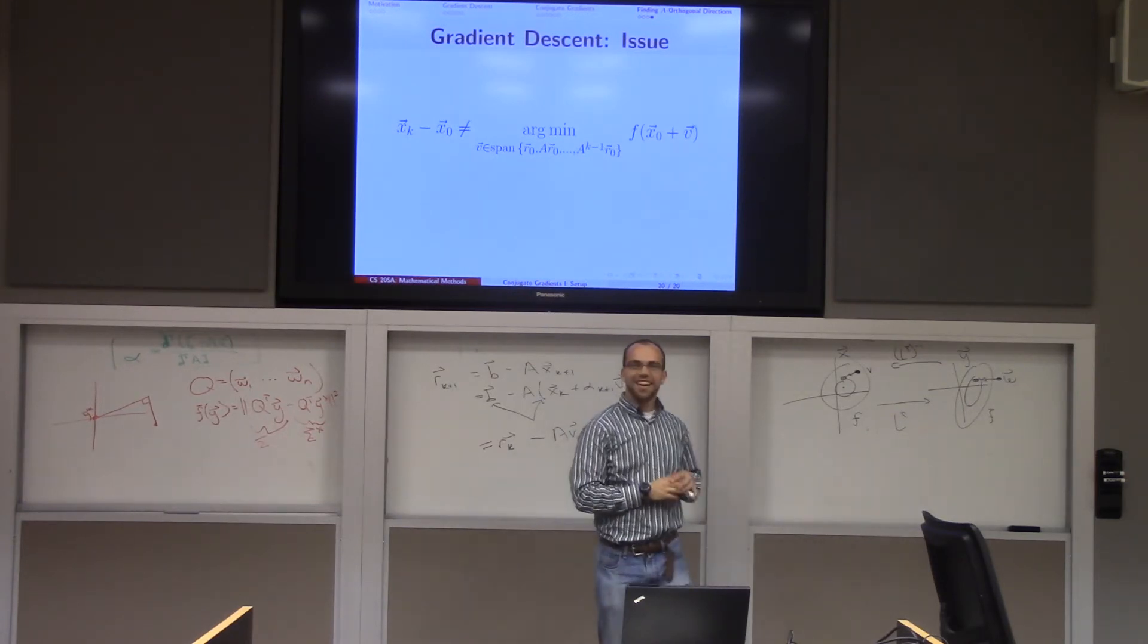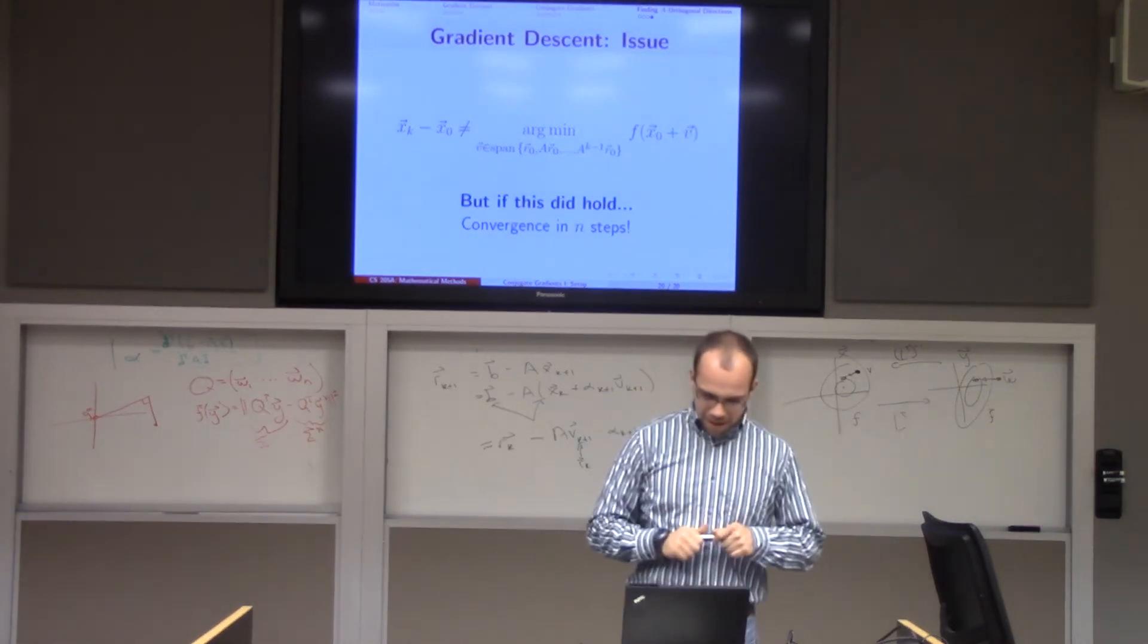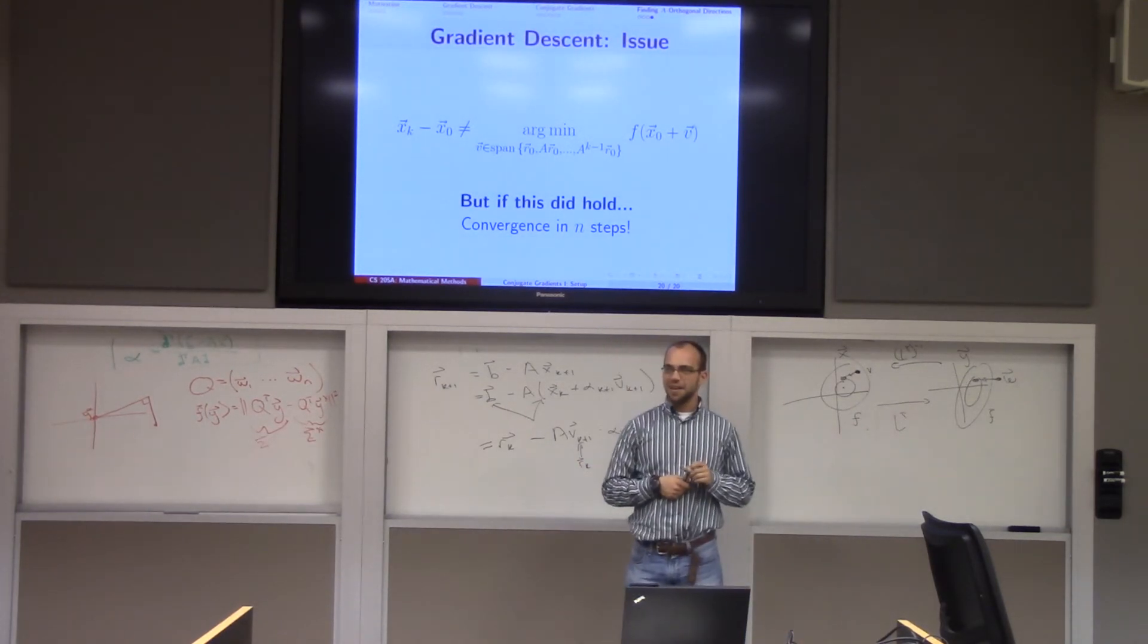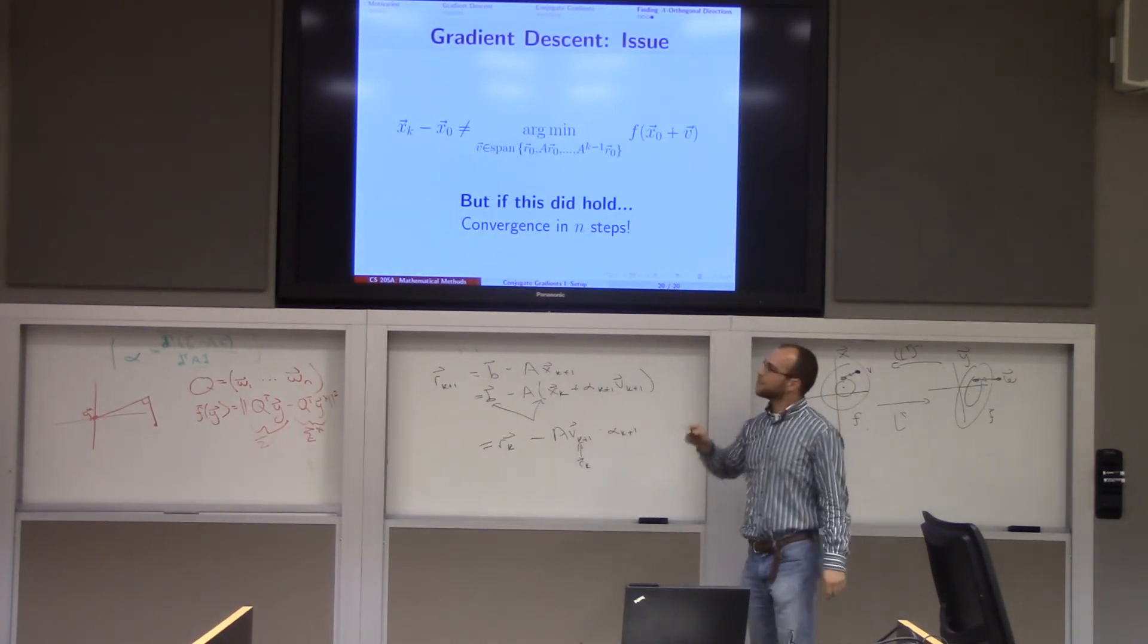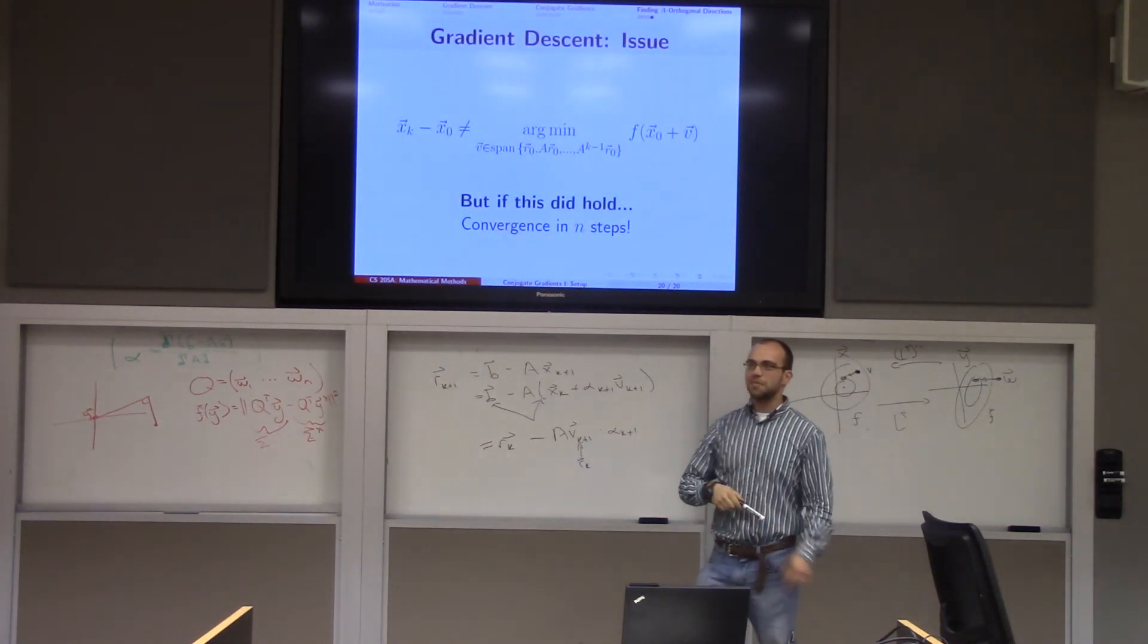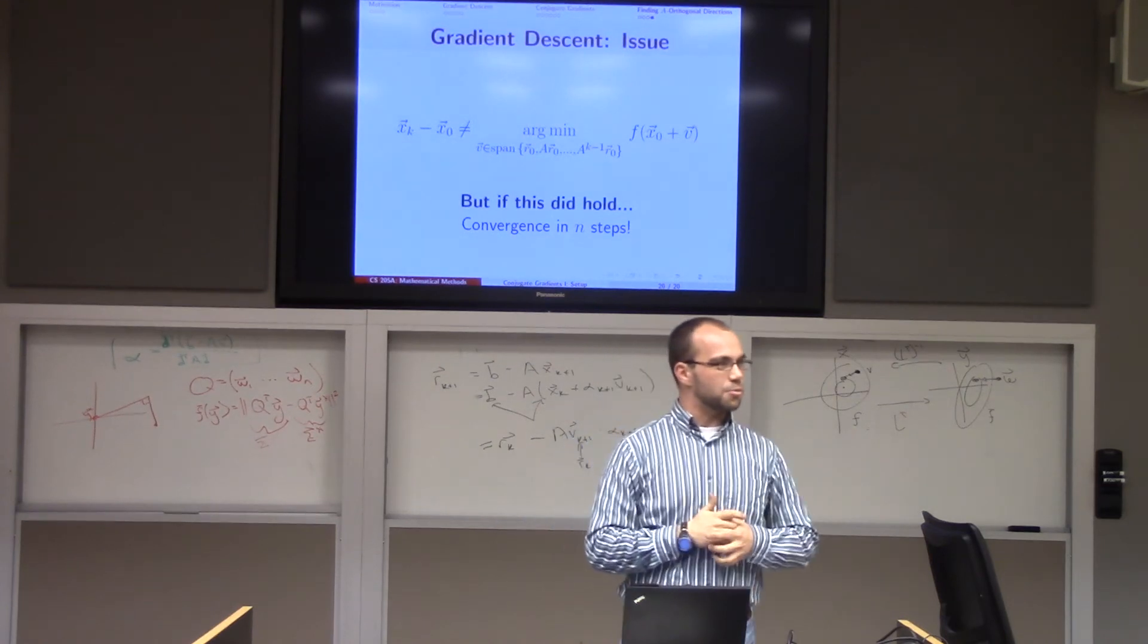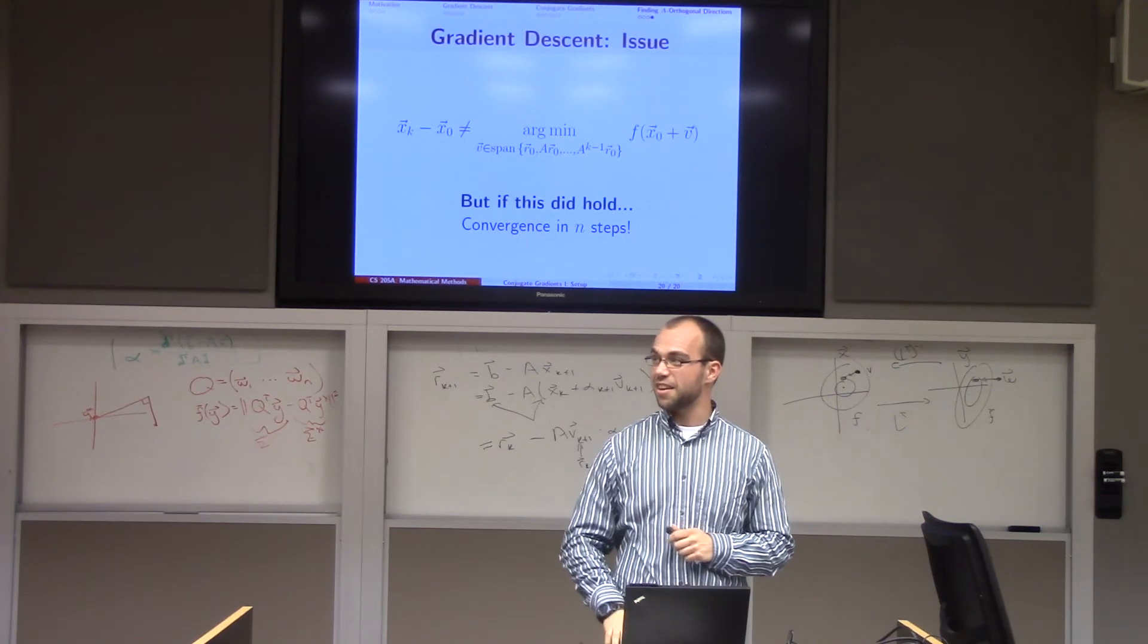But sadly, gradient descent does not have this property. So what we'd like is for this property to hold, and we know that if it does hold, that our algorithm will converge in n steps. Because what happens in the nth iteration? Well, you have n linearly independent vectors, so in particular, v can be any displacement that it wants to be. So this is just going to zip to the minimum of f. So an algorithm that just successively makes larger and larger subspaces that it's searching in, and each time reaches the global minimum, you know it will converge in a finite number of steps. But gradient descent doesn't do that.